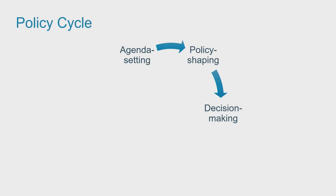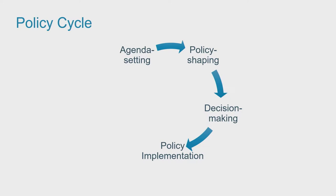Then there is the decision-making phase, in which laws or other policy measures are adopted by parliaments and governments. In the implementation phase, the policy is put into practice. After the implementation of a policy, the policy evaluation phase will determine whether the policy has achieved its objectives. If this is not the case, this issue can again reach the agenda setting phase and the policy cycle starts again.